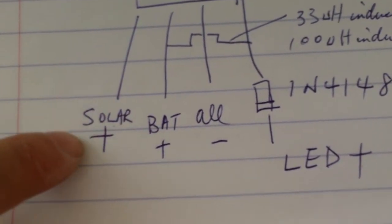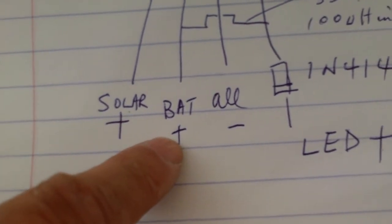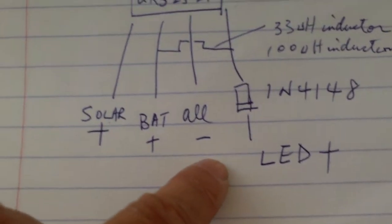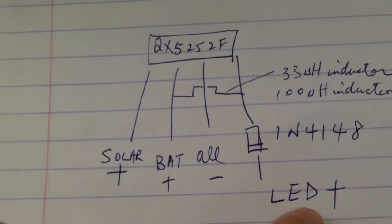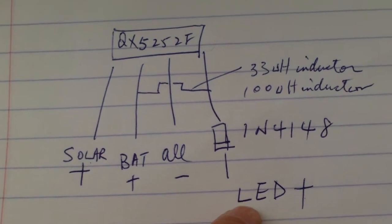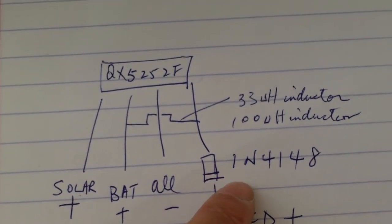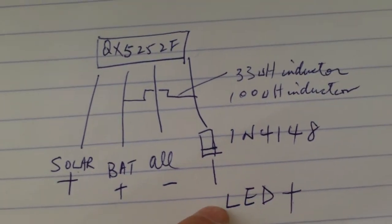Pin 1 is the solar panel connection. Pin 2 is the battery connection. Pin 3 is all the ground or negative. And pin 4 is the LED positive connection. A 1N4148 diode is connected to it.